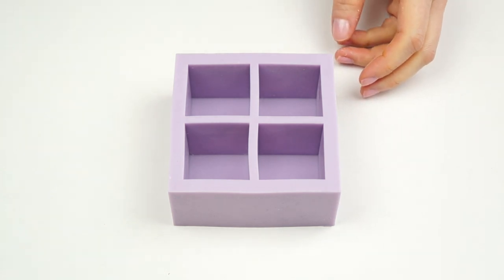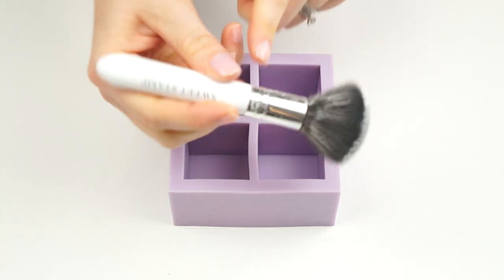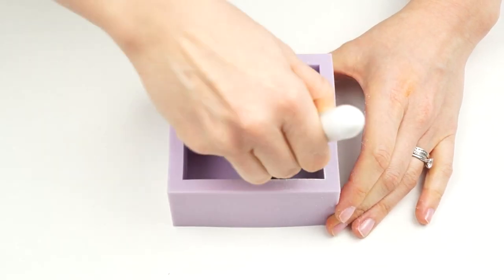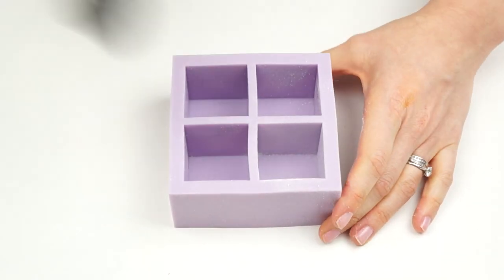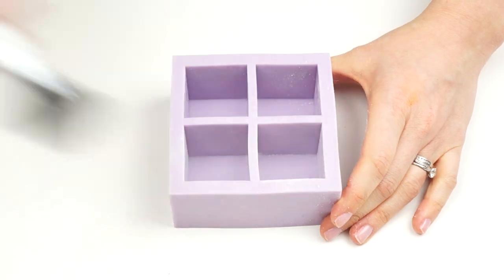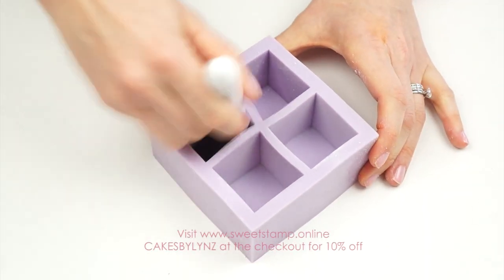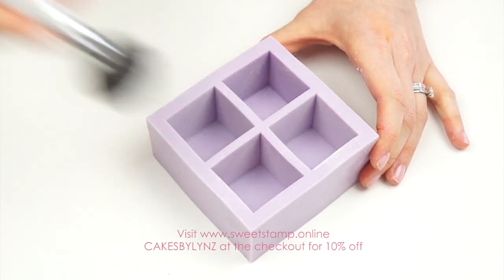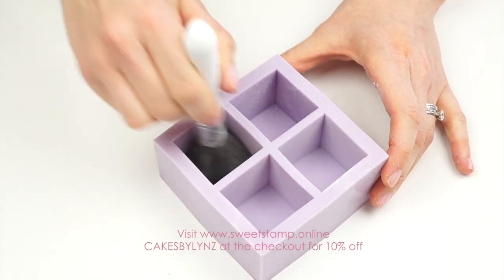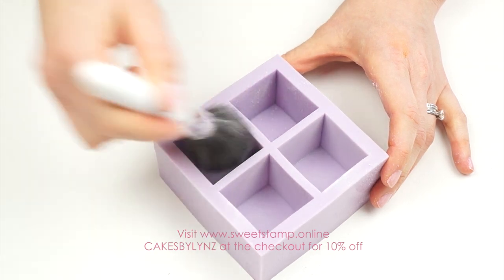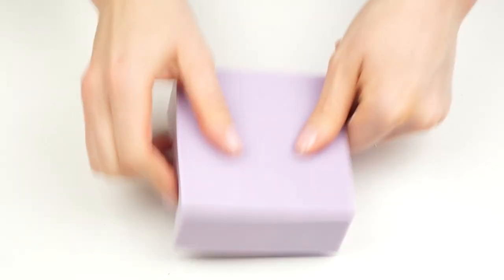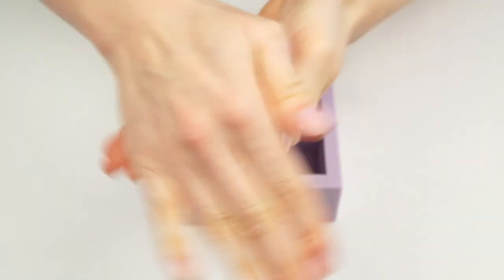Taking my mold I'm going to start by adding in some corn flour. So I've got this really large fluffy brush and this one is by Sweet Stamp and I'm going to go inside just making sure that I'm getting down into those corners. Now I do have a discount code for all of the Sweet Stamp products. All you have to do is enter CAKESBYLYNZ at the checkout on their website and I will put all the details in the description below.